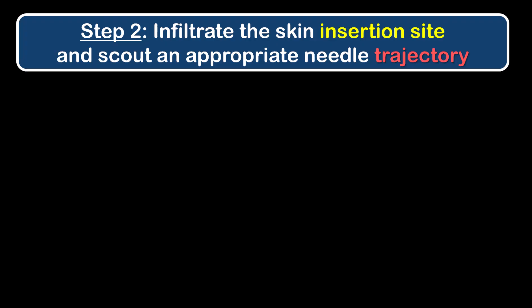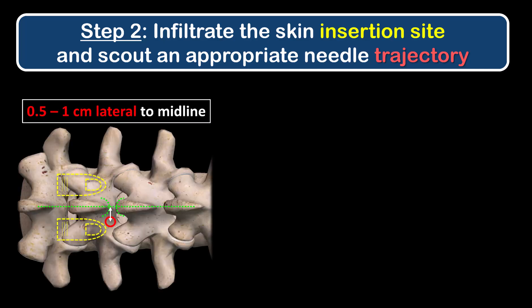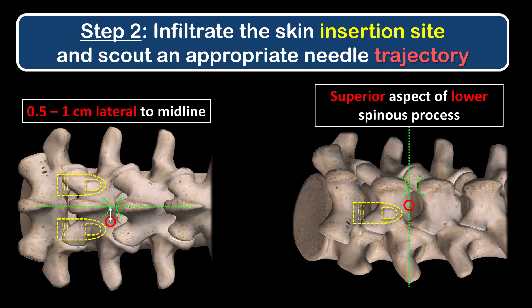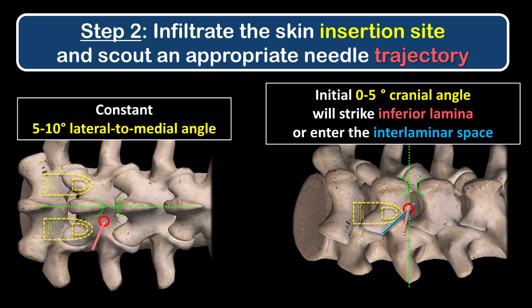Step 2: Infiltrate the planned insertion site with local anesthetic and scout out an appropriate needle trajectory. The appropriate needle insertion point is close to the midline, 0.5 to 1 cm lateral, with only a small 5 to 10 degree lateral to medial angulation — this is why it is called a paraspinous rather than paramedian approach. Equally importantly, the needle insertion point must be in line with the superior edge of the lower spinous process, or in line with the lower end of the interspinous space, and start with little or no cranial angulation.